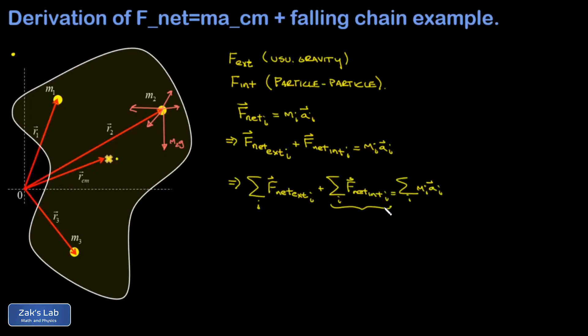When we sum over all particles, the sum of all net internal forces on each particle vanishes. The reason is that every internal force is cancelled pairwise with a reaction force according to Newton's third law - same magnitude, opposite direction. So if m2 is being pulled to the left by some internal force, another particle is being pulled to the right with the exact same magnitude. The vector sum of those two forces is zero, and this is true across every single pair of internal forces.